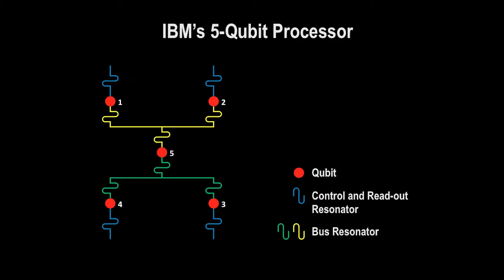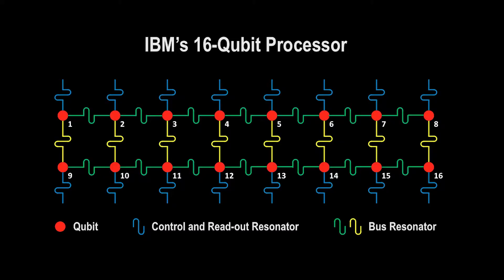Our 5-qubit device forms a star configuration where the 4 qubits connect to the center qubit. Our new 16-qubit device is actually much larger — it is a 2 by 8 square array forming a lattice structure along one direction.